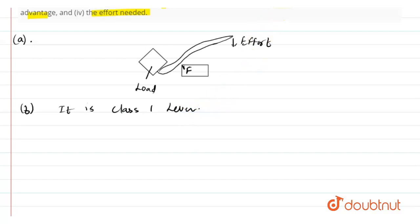Now in third part we have to calculate load arm, effort arm, mechanical advantage and effort needed. As it is given that our crowbar is of 1.5 meter long and we put the crowbar 1 meter inside.